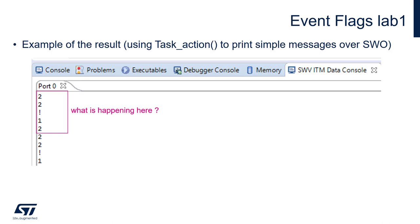Then Task1 goes back into the blocked state, as the flags are cleared on exit of the wait function. We need to wait for the next combination of Task2 and interrupt flags to be set. On the screen we can see, after the exclamation mark and '1', a series of '2' digits again, and just after the next exclamation mark, a single occurrence of '1' — confirming Task1 was unblocked by the combination of flags from Task2 and the interrupt.